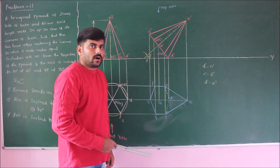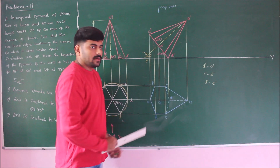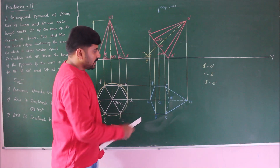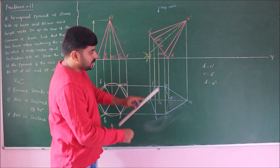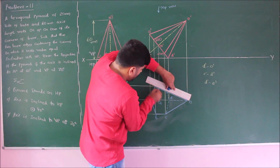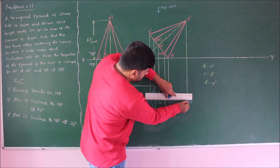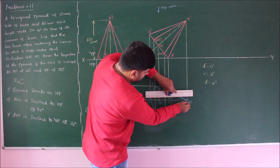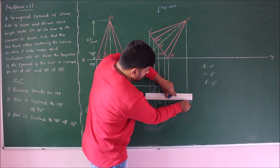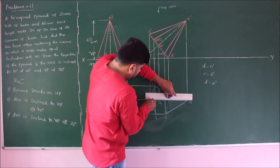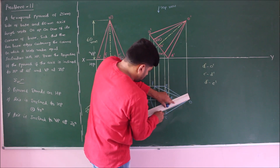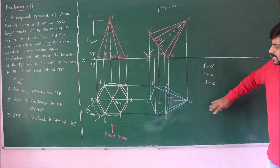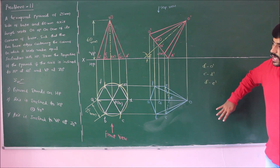This completes the marking of invisible edges and the boundary of the pyramid. Connect the remaining base edges and slant edges: f to o, and a to o. However, a to o overlaps the invisible edge d to o — give preference to the visible edge, so draw a dark line from a to o, and finally b to o.